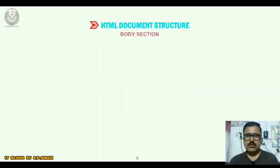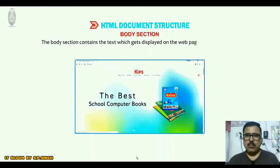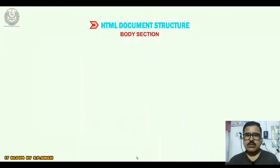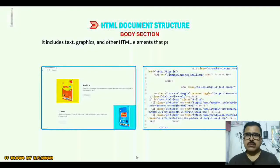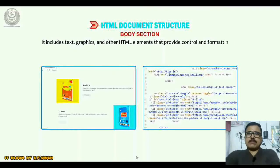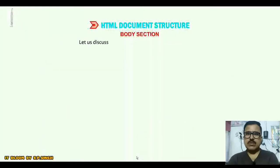Body section. The body section contains the text which gets displayed on the web page, along with other tags and attributes. It includes text, graphics, and other HTML elements that provide control and formatting to a page — like fonts, paragraphs, lists, and other elements. Let us discuss the basic structure of an HTML document.